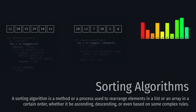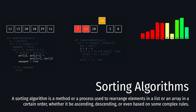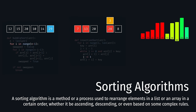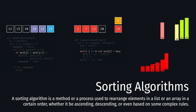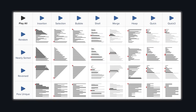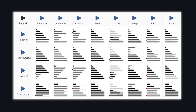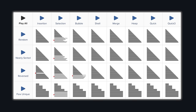Sorting algorithms. A sorting algorithm is a method or process used to rearrange elements in a list or an array in a certain order, whether it be ascending, descending, or even based on some complex rules. The purpose of sorting is to organize data in a way that makes it easier to use, easier to search, analyze, and display information efficiently. There are actually eight different sorting algorithms working on four different initial conditions: random, nearly sorted, reversed, and few unique — a beautiful representation of how these algorithms are great at sorting some initial conditions, but bad at sorting others.